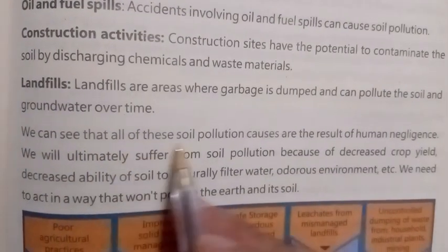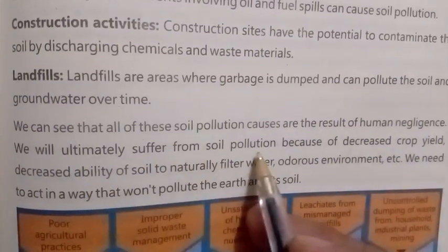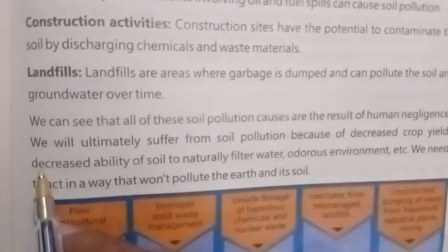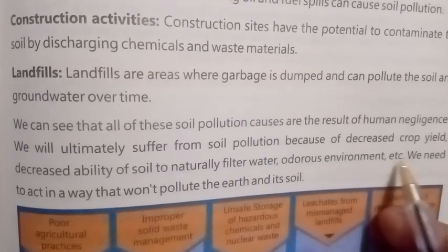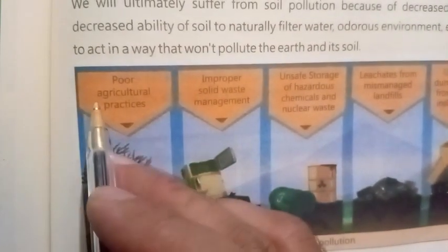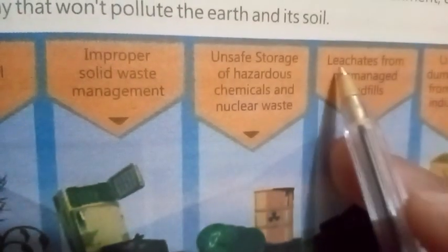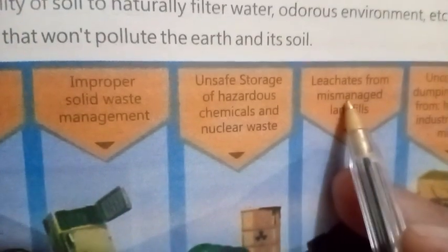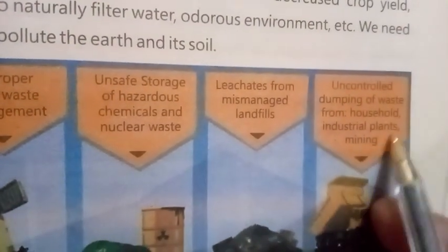We can see that all of these soil pollution causes are the result of human negligence. We will ultimately suffer from soil pollution because of decreased crop yield and decreased ability of soil to naturally filter water. We need to act in a way that won't pollute the earth and its soil. Causes of soil pollution include: poor agricultural practices, improper solid waste management, unsafe storage of hazardous chemicals and nuclear waste, leaching from mismanaged landfills, uncontrolled dumping of waste from households, industrial plants, and mining.